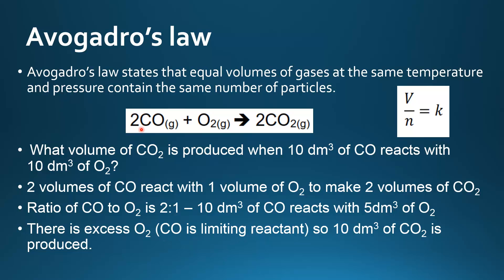Next we look at the ratio between carbon monoxide and carbon dioxide — it's a two to two, or a one to one ratio. So if we react 10 decimetres cubed of carbon monoxide, that means we'll produce 10 decimetres cubed of carbon dioxide.